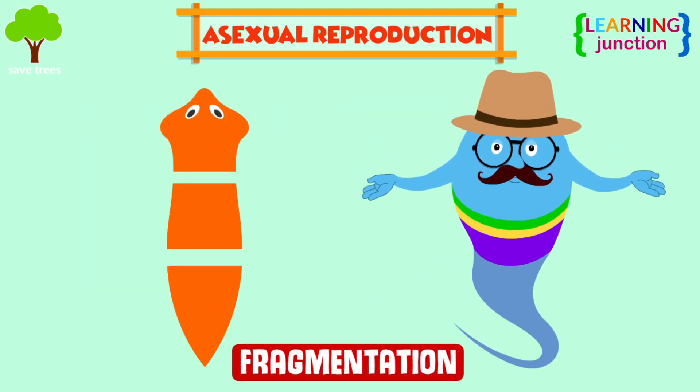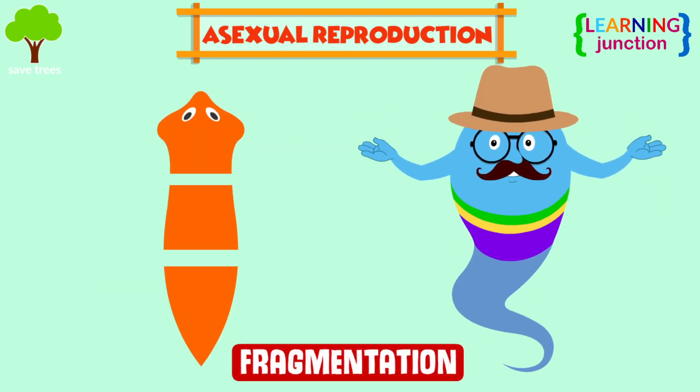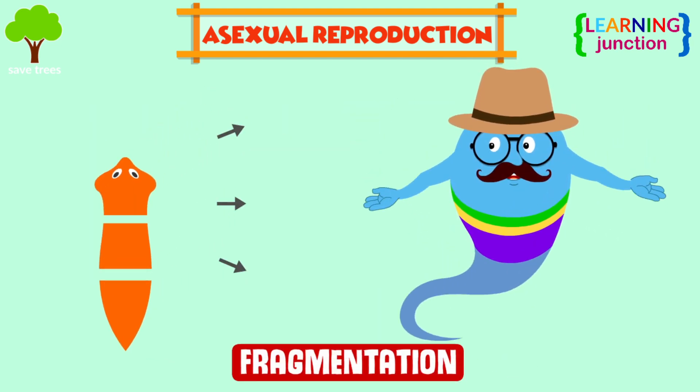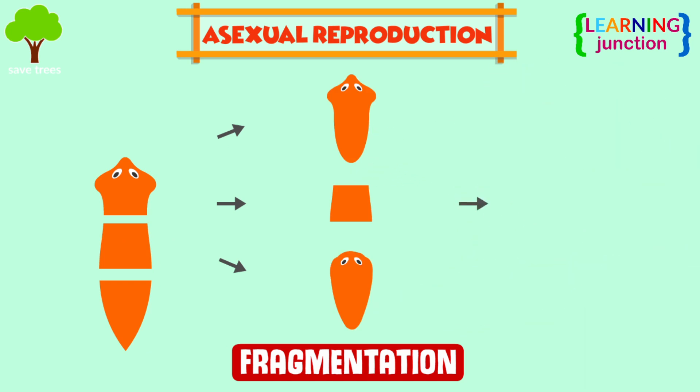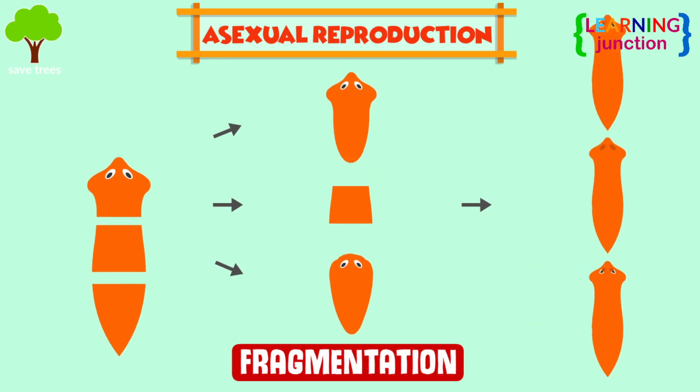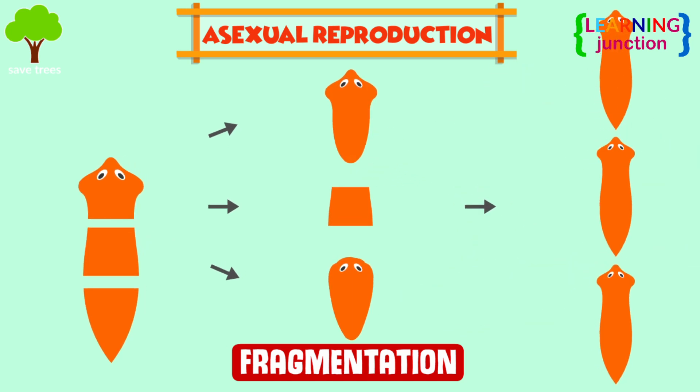Fragmentation: the parent organism splits into several parts, and each part grows into a new individual. An example is planaria.